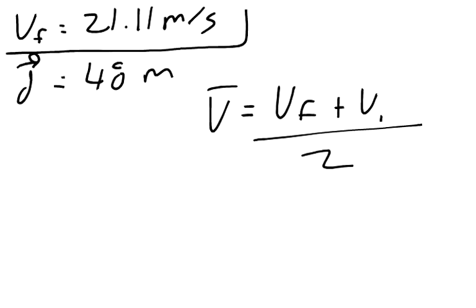And since our start was zero and our finish was 21.11, we can just say 21.11 divided by 2. And it gives us an average of, so V average equals 10.56. So 10.56 meters per second.